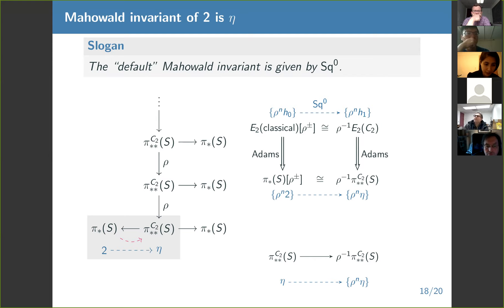Here's the main question. We have a thing that at least has the right signature to be the Mahowald invariant, or at least it can be compared with the classical Mahowald invariant. Does it actually compute any classical Mahowald invariants, or have we just defined our own? The answer is it recovers some interesting classical Mahowald invariants, but it doesn't recover all of them.